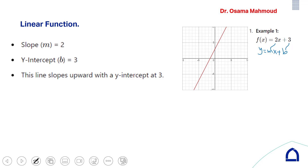To graph the line, the y-intercept is Y equal to 3. To find the x-intercept, you put F(x) equal to 0, then move terms to the other side, giving X equal to minus 3 over 2, which is minus 1.5. Once you know these two points you can connect them to draw your line.